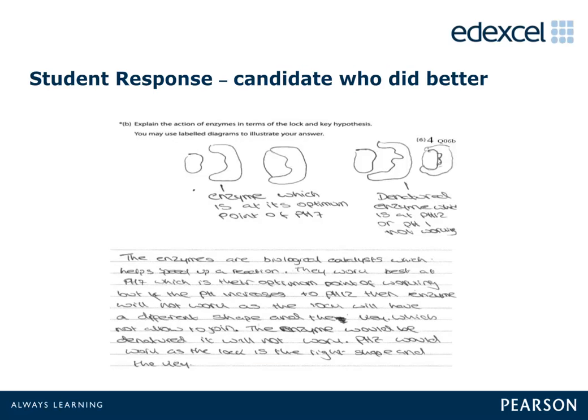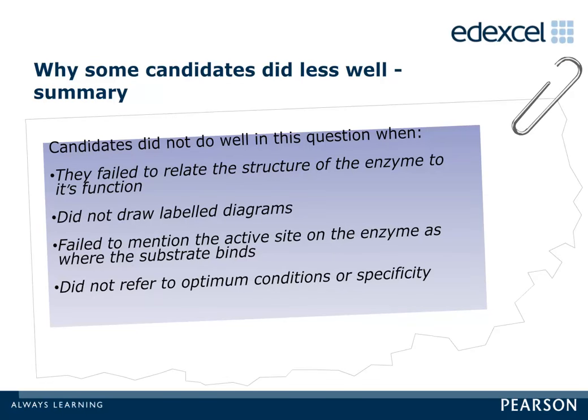In this case, the candidate has used classic style diagrams to explain the structure-function relationship of the enzyme. They have also made reference to optimum conditions and shown in diagrammatic form the denaturation of the enzymes. Unfortunately, they failed to make reference to the active site on the enzyme. Unsuccessful candidates were unable to relate the structure of the enzyme to its function, were confused about where the active site was or failed to mention it, and gave no reference to specificity or optimum temperature or pH.